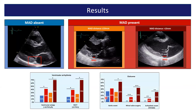Looking at outcomes, we saw no differences in aortic events except for patients with MAD above 10 mm more frequently having aortic events. Both mitral valve surgery and arrhythmic events — VT and sudden cardiac death — were exclusively found in patients with mitral annular disjunction. Furthermore, all of these patients had mitral annular disjunction above 10 mm.